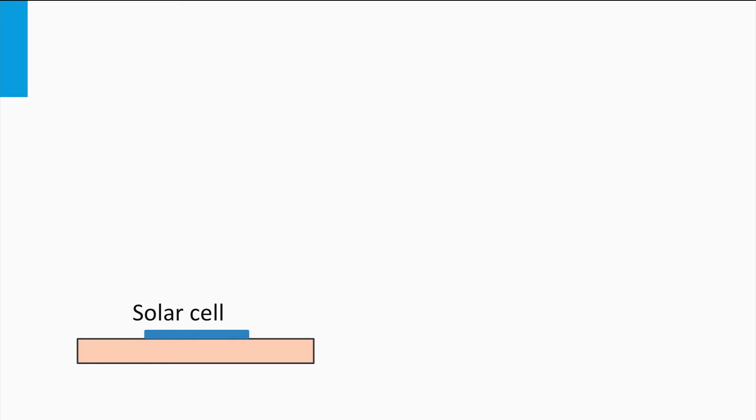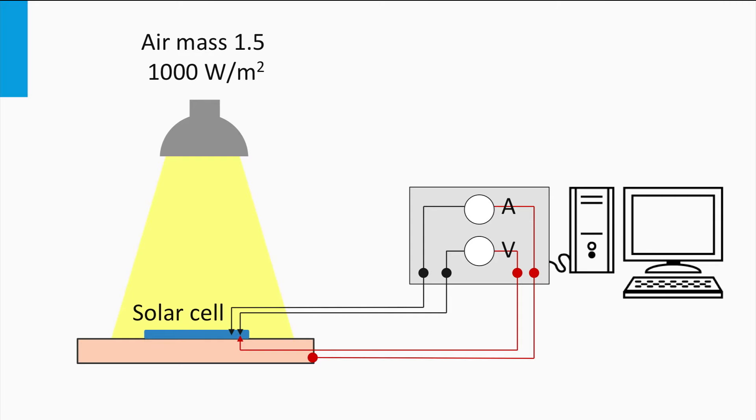The first component is a solar simulator, which is a light source that simulates both the shape of the AM1.5 solar spectrum and an irradiance of 1000W per square meter. Secondly, the setup has a voltage source which applies a varying voltage over the solar cell or solar panel. An ampere meter measures the current generated by the solar device at every voltage.